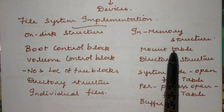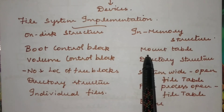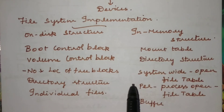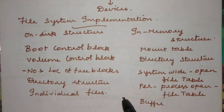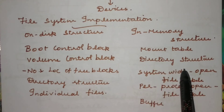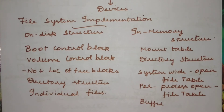Coming to the in-memory structure, we have the mount table, which holds information about what parts of files are mounted in available directories. Mounting means attaching some part of the file to another directory or file system. All mount operation details are stored in this mount table. There is also a directory structure in memory — for each file, the directory structure stores the file organization information. In Unix, this includes the inode and associated file properties.